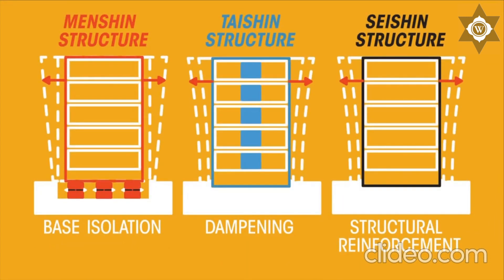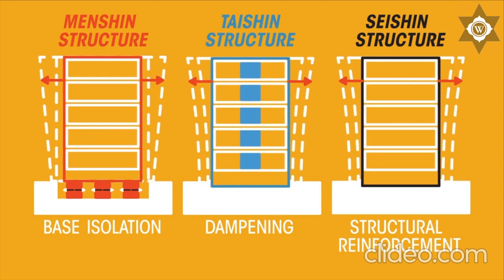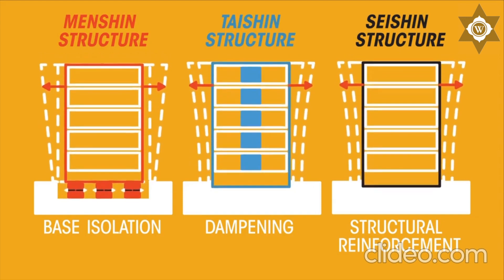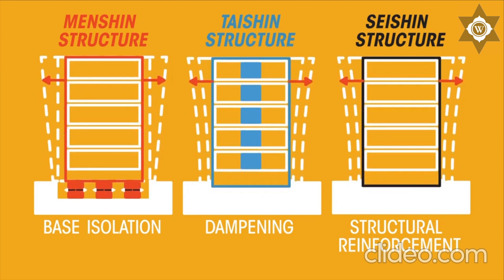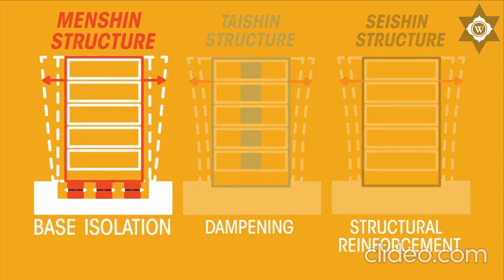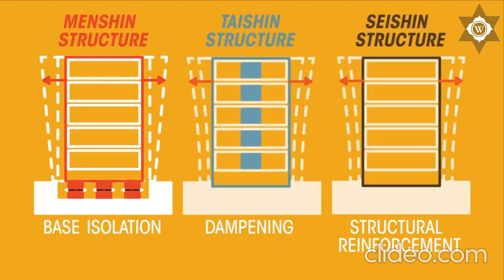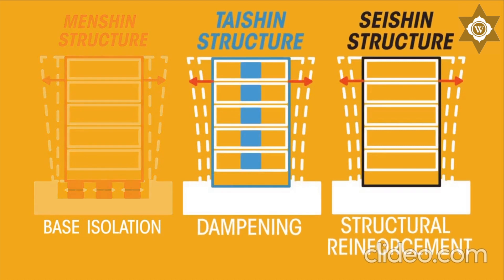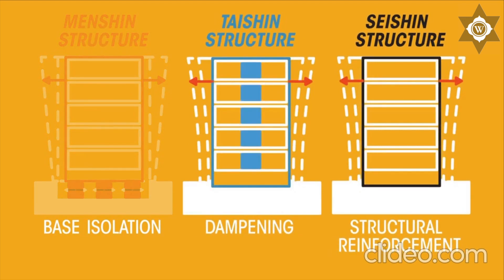Modern so-called earthquake-proof structures come in different designs, but all have the same objective: allow the building to survive significant side-to-side and up-and-down motion. They may support the whole building on shock absorbers, or rely on the internal and external skeleton of the building to retain structural integrity while allowing the building around it to move.